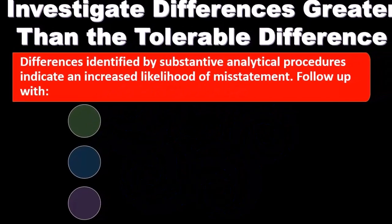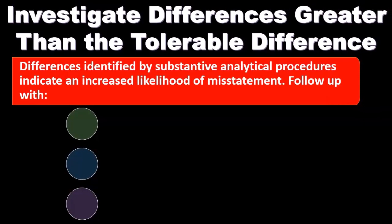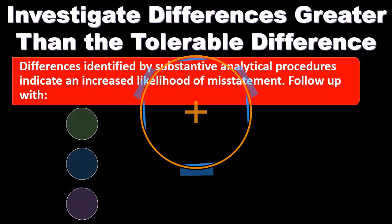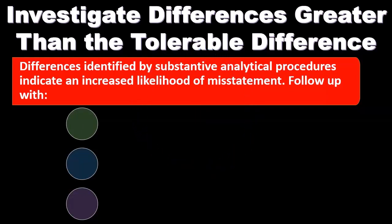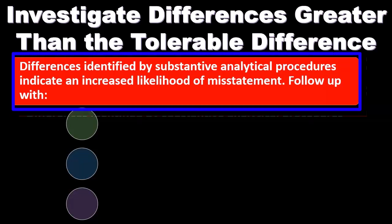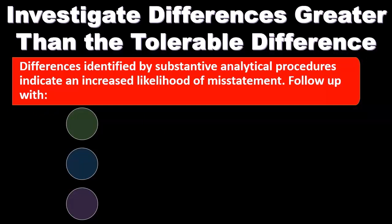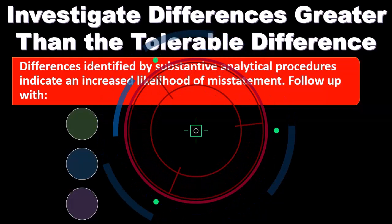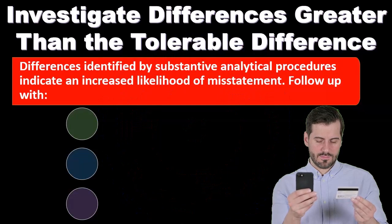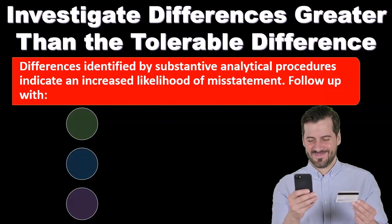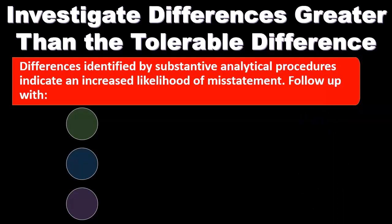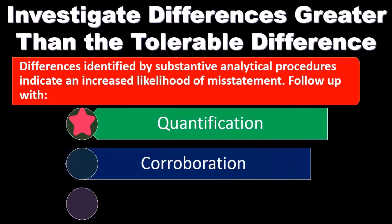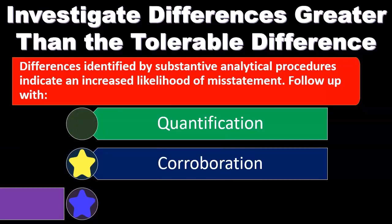We're going to say, this is the expectation — everything should be within this range. Anything outside of this range within our analytical procedure, we will dig into with further testing. Differences identified by substantive analytical procedures indicate an increased likelihood of misstatement. If we're outside the range, we're outside the norm — that doesn't mean there's a misstatement for sure, but it's something unusual. We go through quantification, follow-up with corroboration, and evaluation.